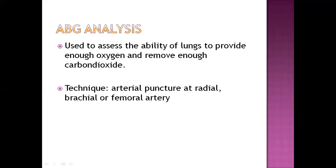The next procedure is arterial blood gas (ABG) analysis. This is used to measure the acid-base balance of the respiratory system or the oxygen and carbon dioxide exchange in the respiratory system. We perform ABG analysis by puncturing the artery at a radial, brachial, or femoral site.